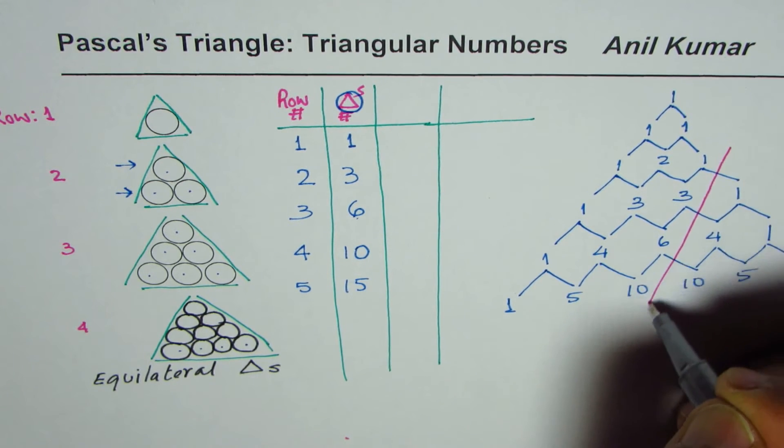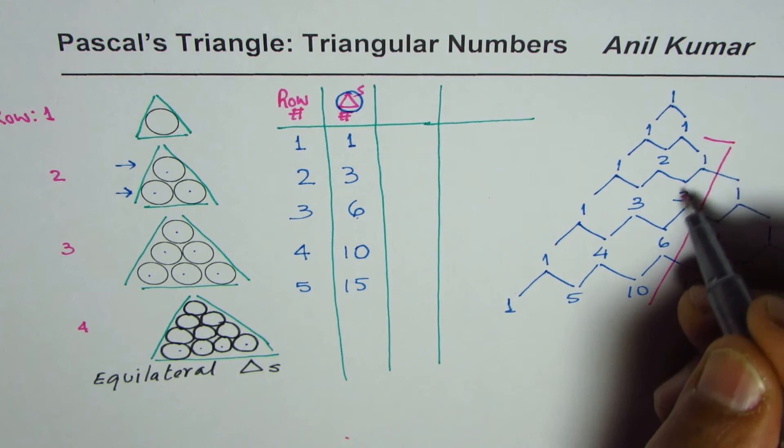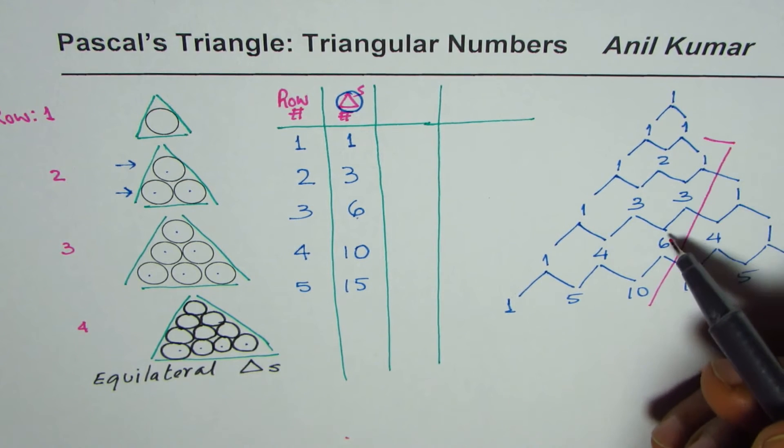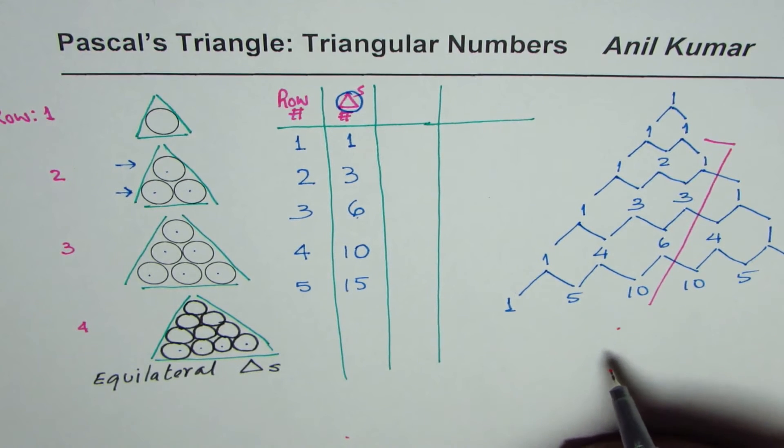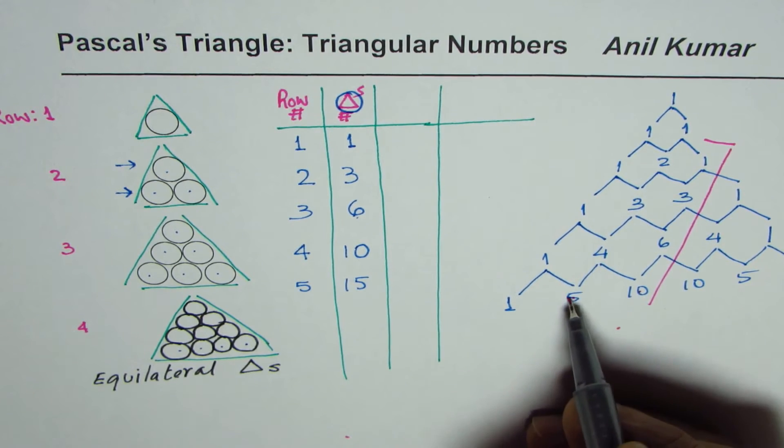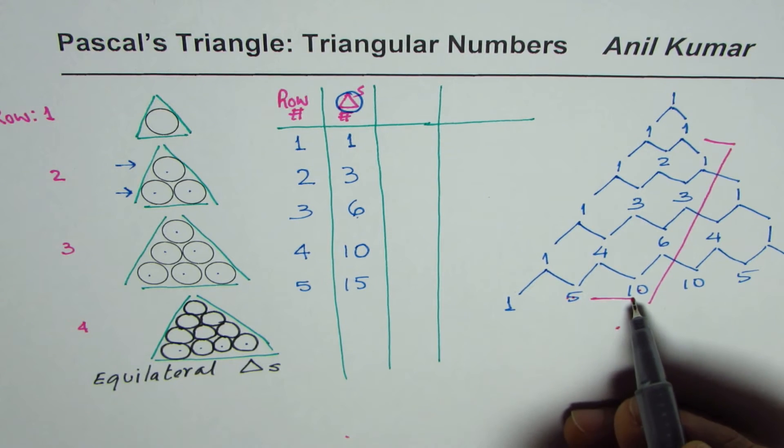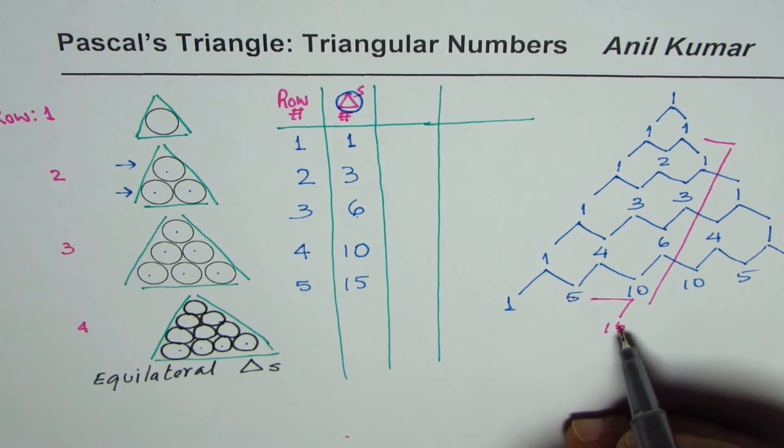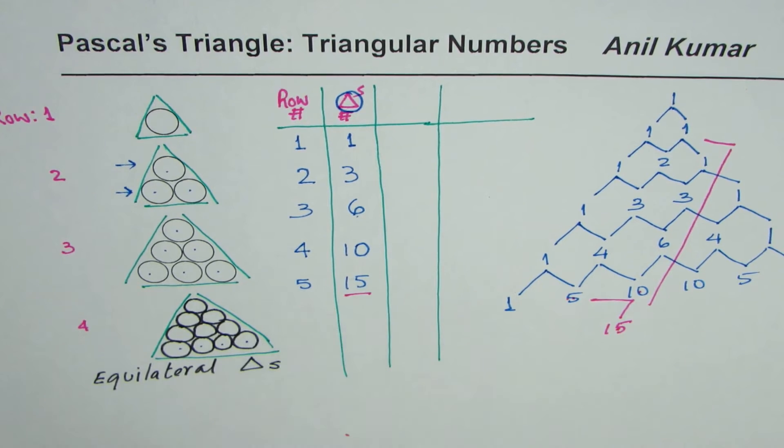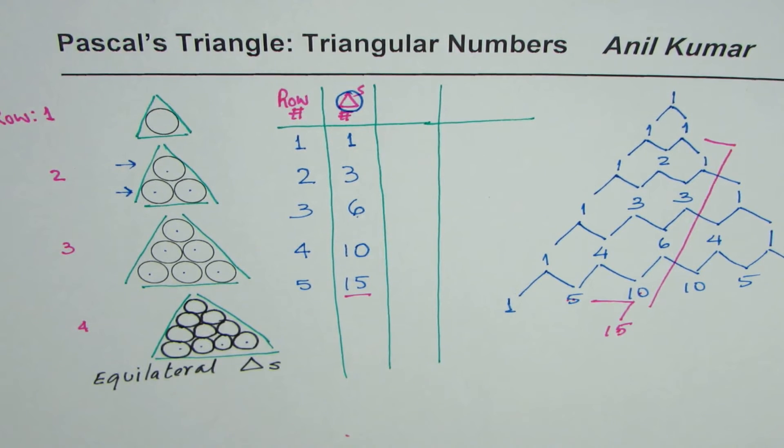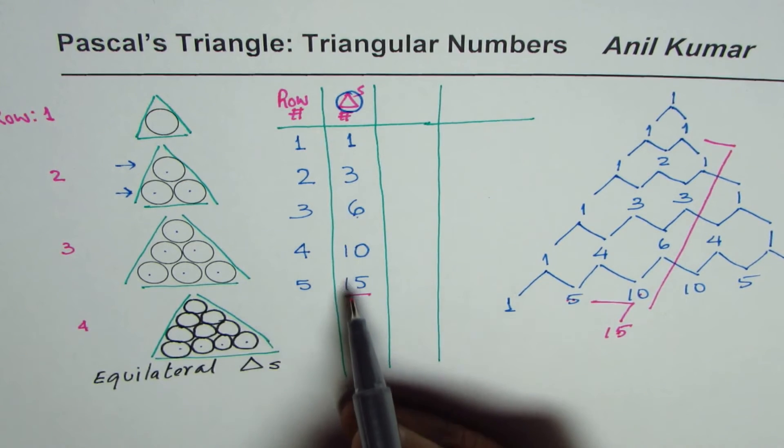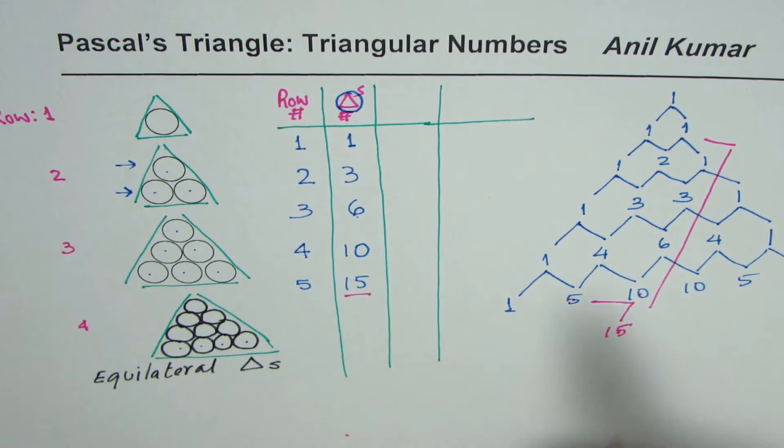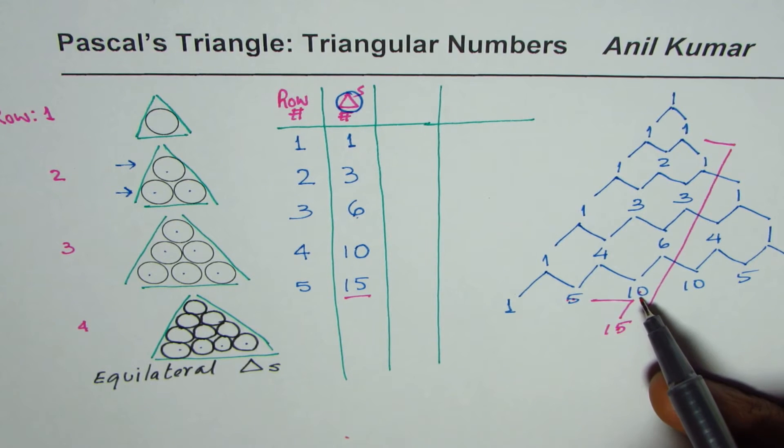So if you notice this particular diagonal, which is the third diagonal: one, three, six, ten. And if I expand this, the number here will be when you add five and ten. Do you see that? When you add five and ten, you'll get this number, which will be 15. So we get the next number.